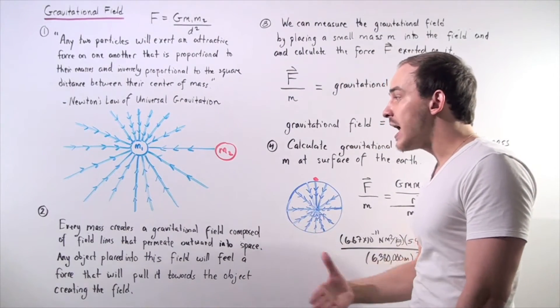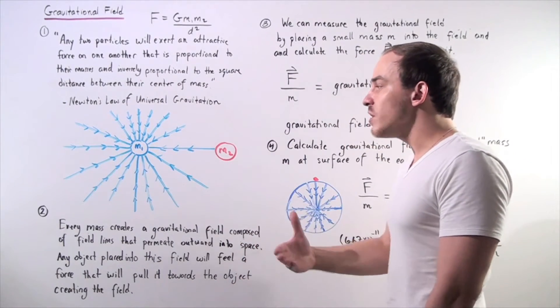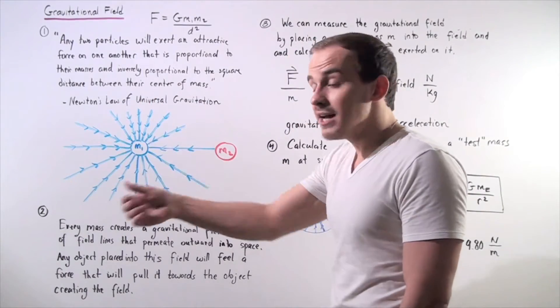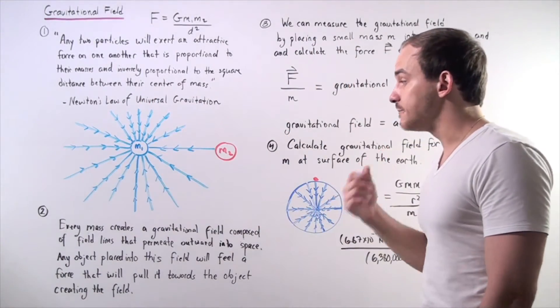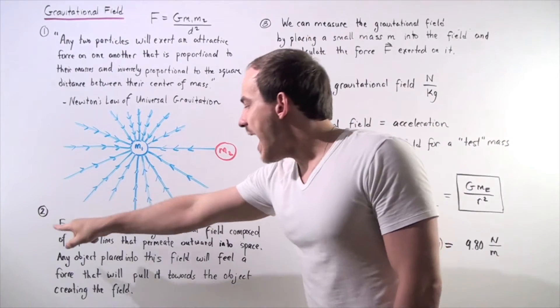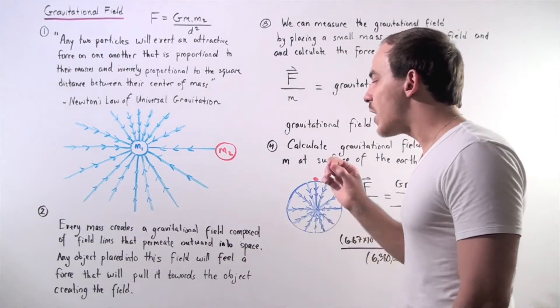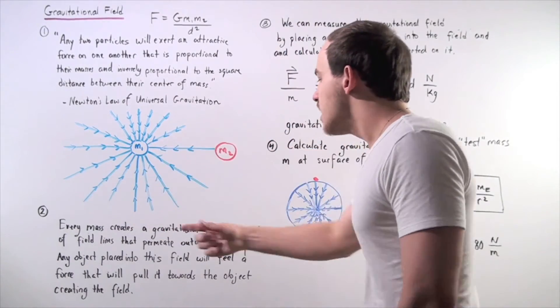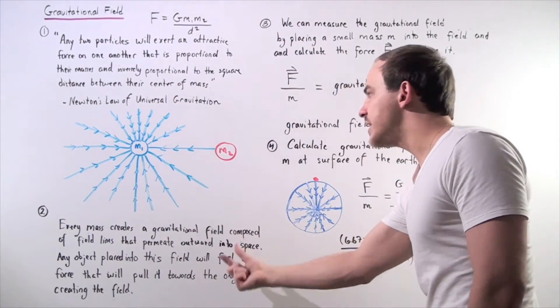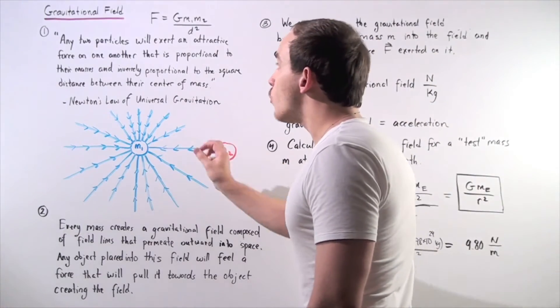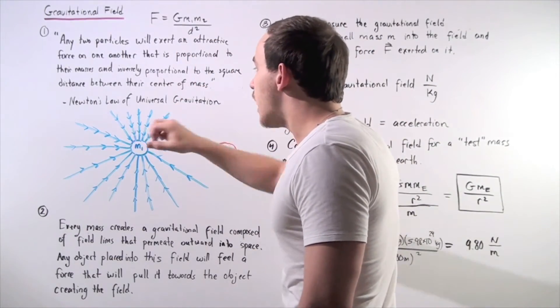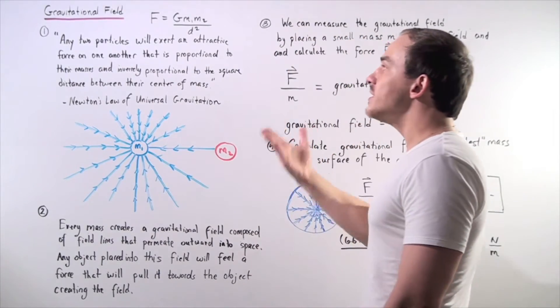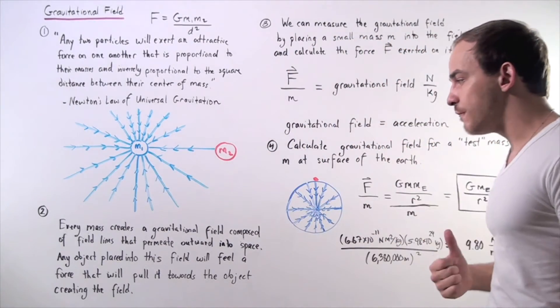So gravitational fields help explain forces acting over a distance, non-contact forces such as gravity. So, once again, every mass creates a gravitational field composed of field lines, shown here, that permeate outward into space. And notice, for gravity, the field lines point in a direction towards the mass because we're dealing with an attractive force.